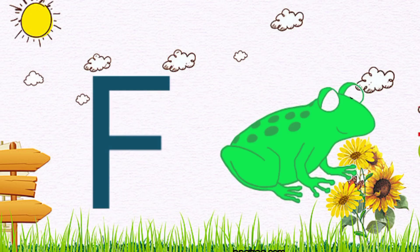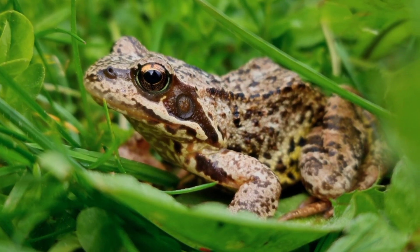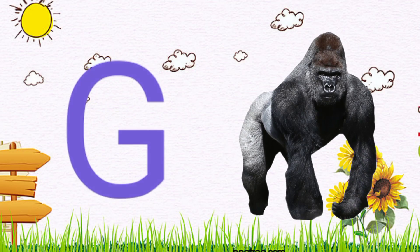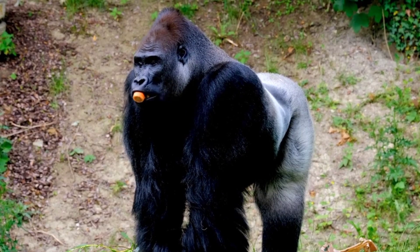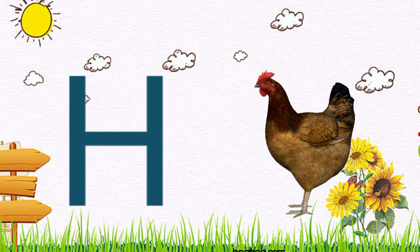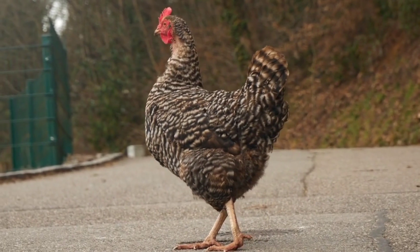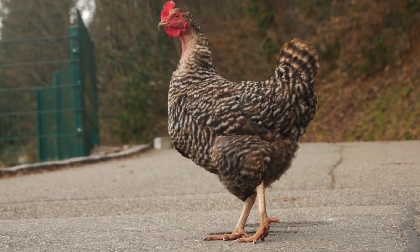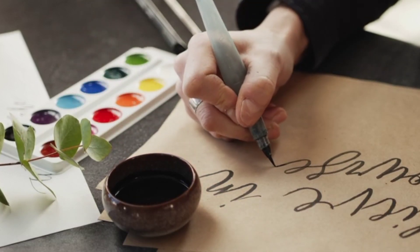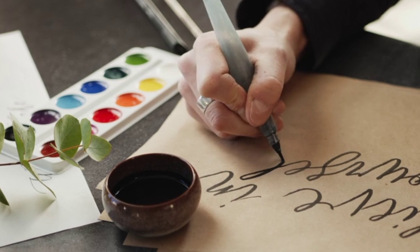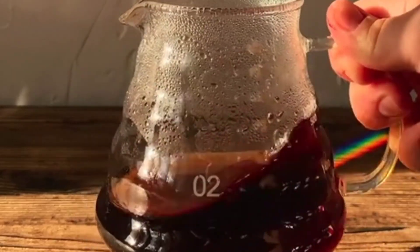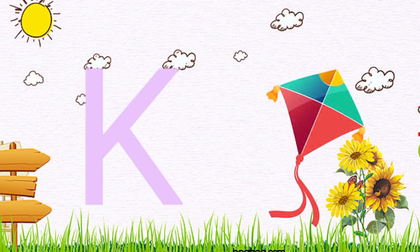F for frog. G for gorilla. H for hen. I for ink. J for jug. K for kite.